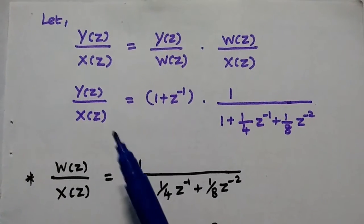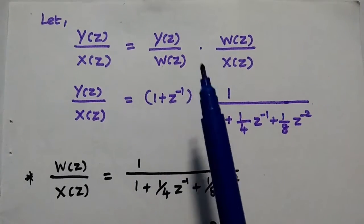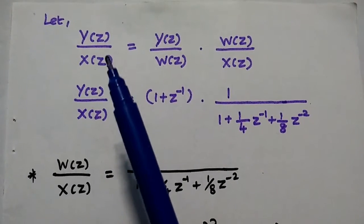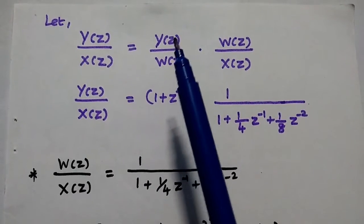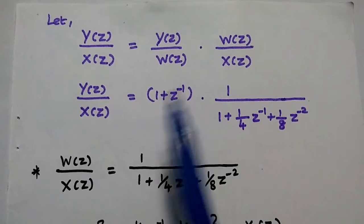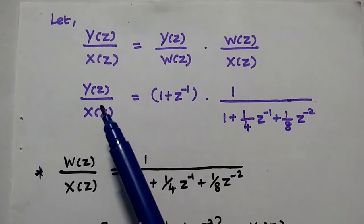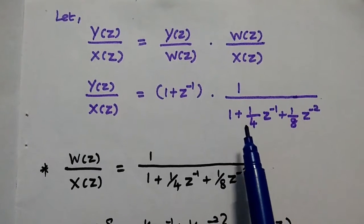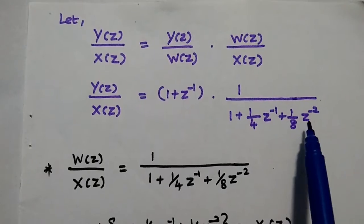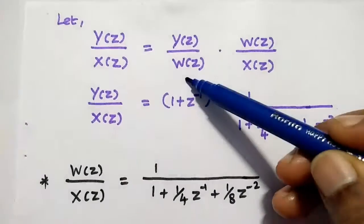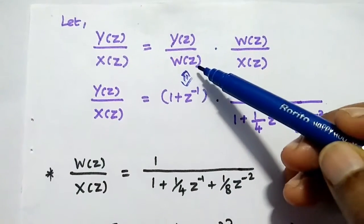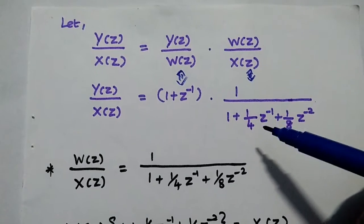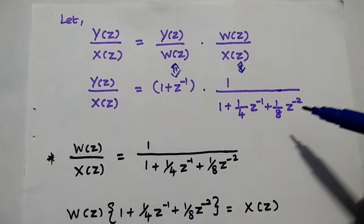Next, we split H(Z) = Y(Z)/X(Z) into two terms by multiplying and dividing by W(Z). So Y(Z)/X(Z) becomes [Y(Z)/W(Z)]·[W(Z)/X(Z)]. This can be written as: the numerator is (1 + Z⁻¹) and the denominator is (1 + 1/4·Z⁻¹ + 1/8·Z⁻²). We then equate these two terms.